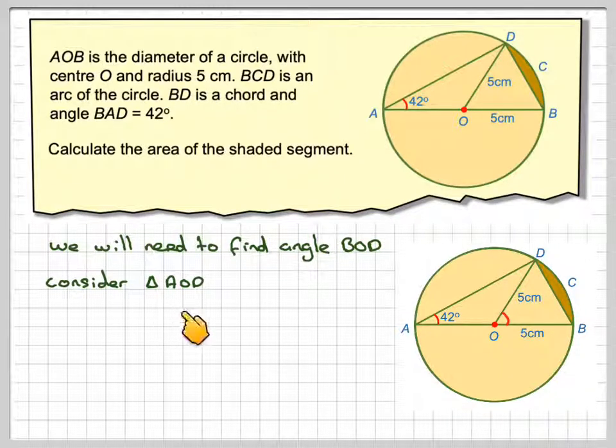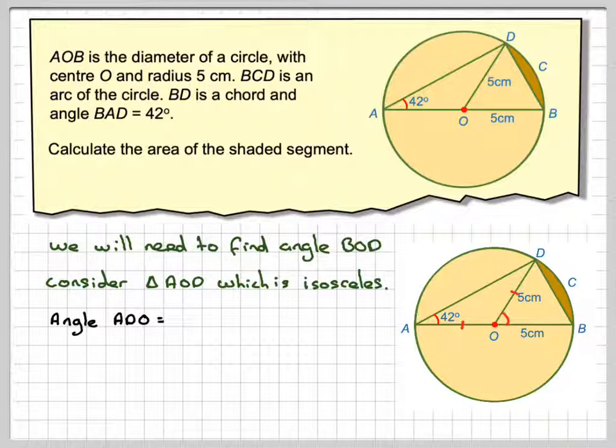Consider triangle AOD, this triangle here, which is isosceles because this length is equal to this length, equal radii. Then angle ADO, this one here, will be equal to 42.